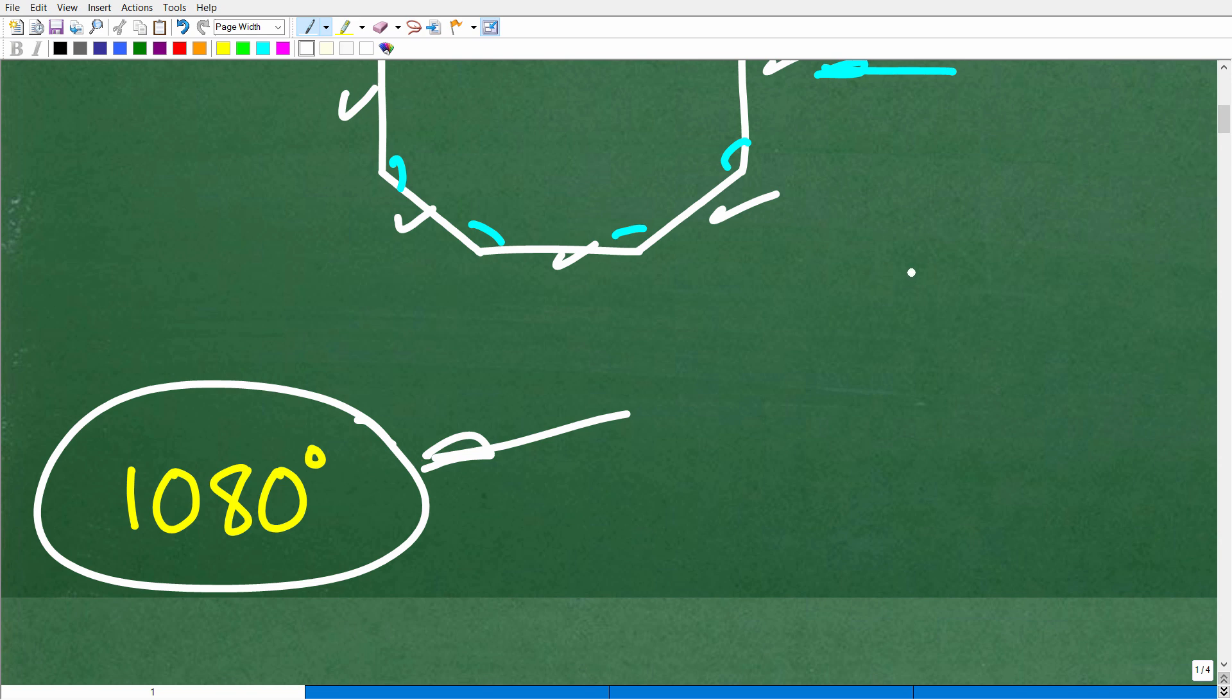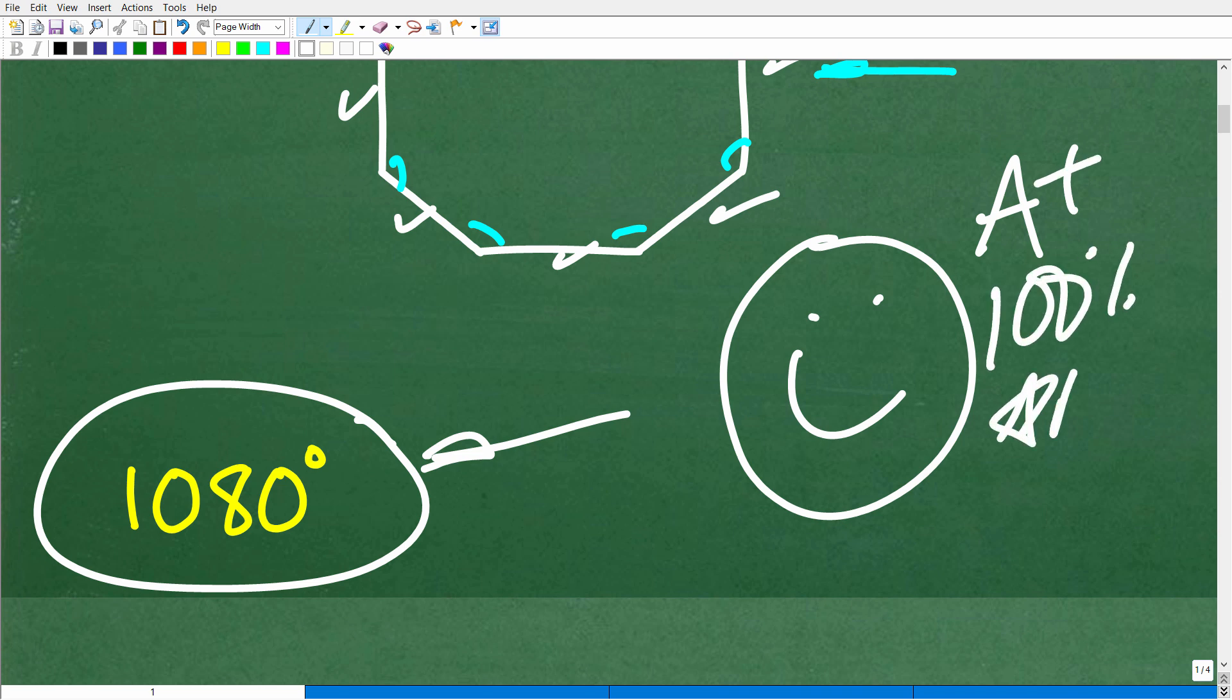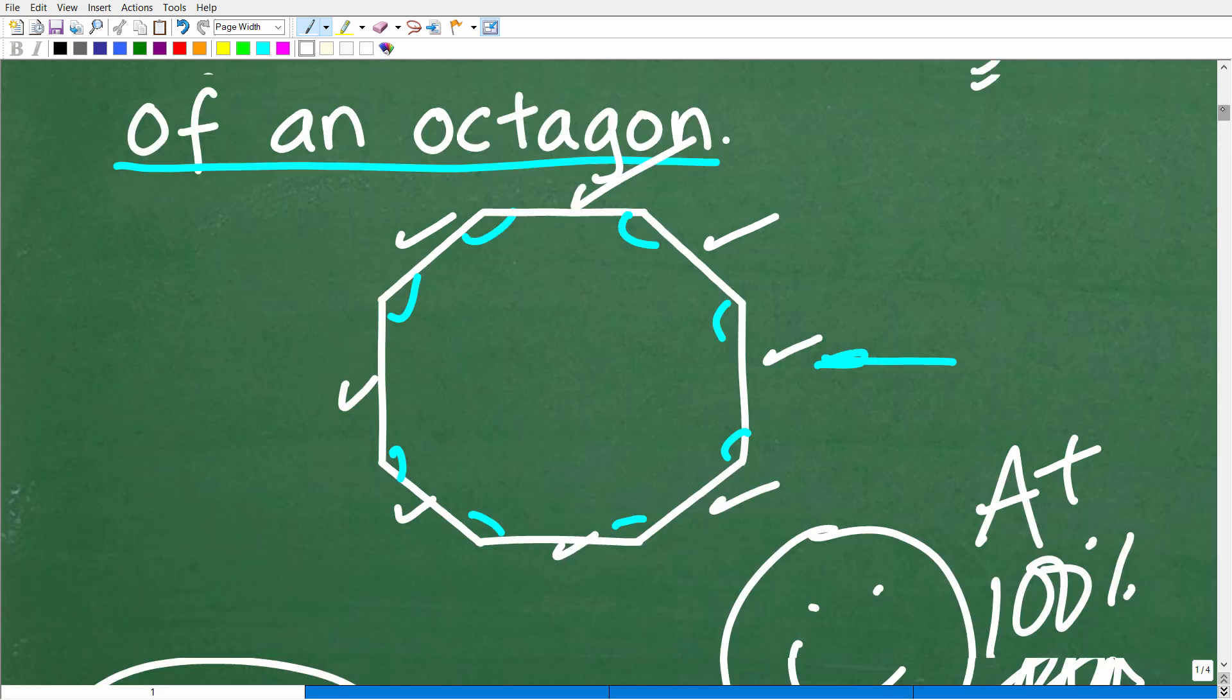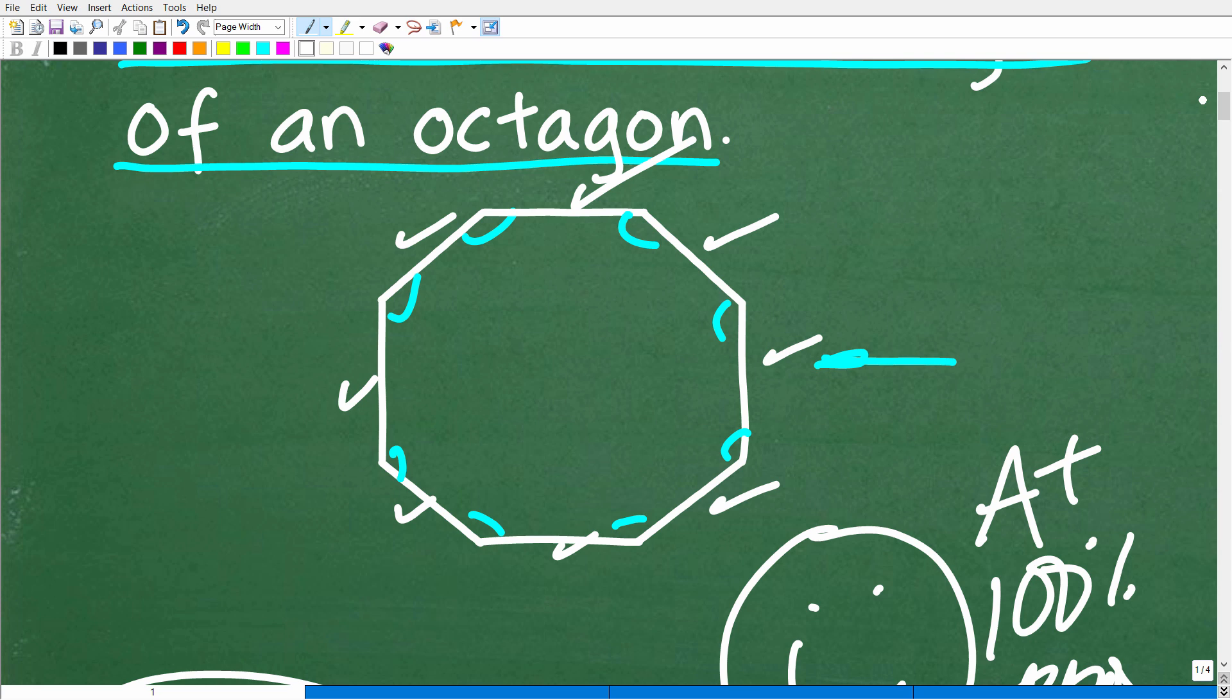1,080 degrees is the sum of the interior angles of an octagon. Now, if you got this right, that is fantastic. Matter of fact, I have to give you a nice little happy face. There's your happy face, there's your A plus, there is your 100% and multiple stars. So you could tell your friends and family that, indeed, you know how to figure out the sum of the interior angles of a polygon.